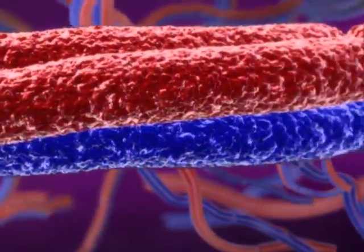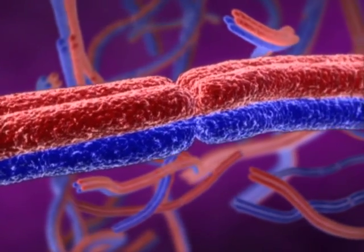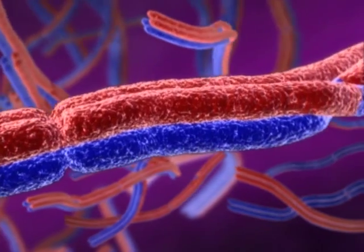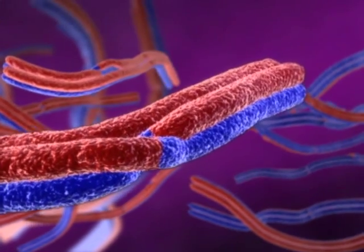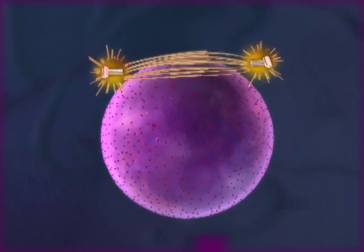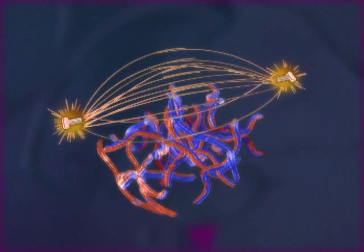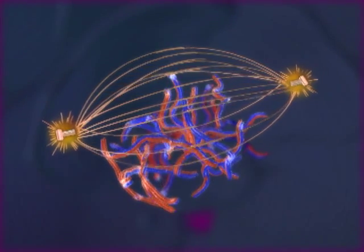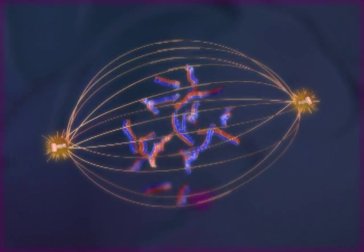In meiosis, homologous chromosomes stick together in pairs. The close association of homologous chromosomes allows segments of non-sister chromatids to trade places. This recombination of maternal and paternal genetic material is a key feature of meiosis.